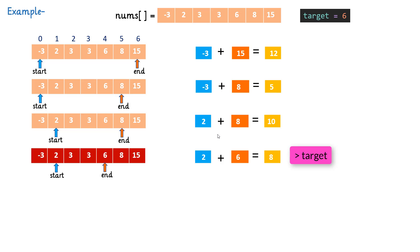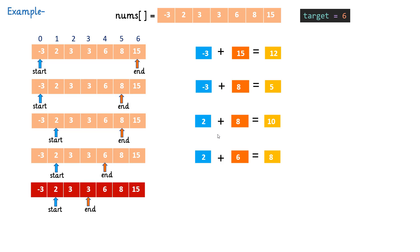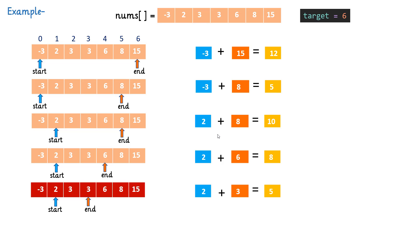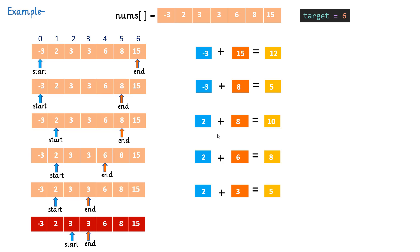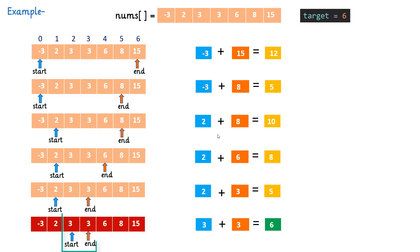The sum of 2 plus 6 is 8, which is again greater than 6. So move the end pointer towards the left again. The sum is 2 plus 3 equals 5, which is less than 6. So move the start pointer towards the right. Now the sum is 6, which matches our target. Once the condition is satisfied, we break this loop and return the indices of these two elements.